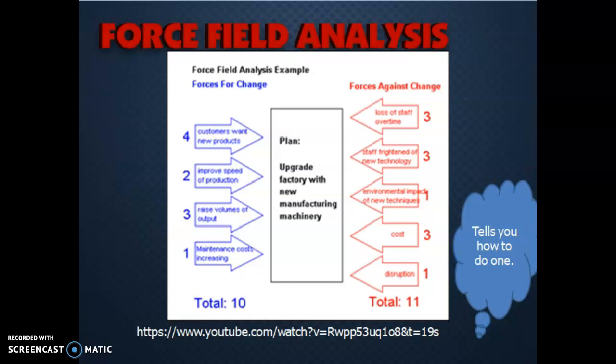If we look on the right hand side, these are forces against the change of upgrading the manufacturing machinery. Staff may feel a little bit overwhelmed. Staff may no longer be able to work overtime because these machines can work faster. It's very expensive to buy this machinery. It's going to disrupt the manufacturing process to start off with. And once again, scores have been rated next to each one of these forces against the change. And if we add 3 plus 3 plus 1 plus 3 plus 1, we can see that that gives us a total of 11.